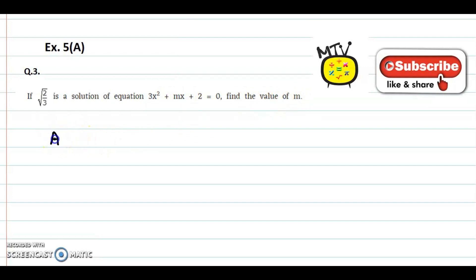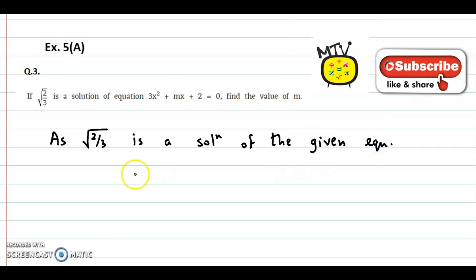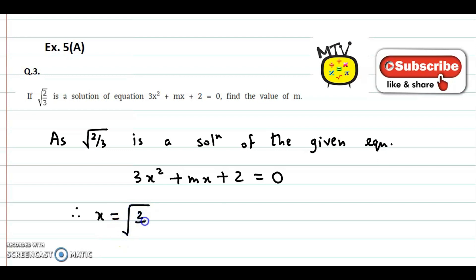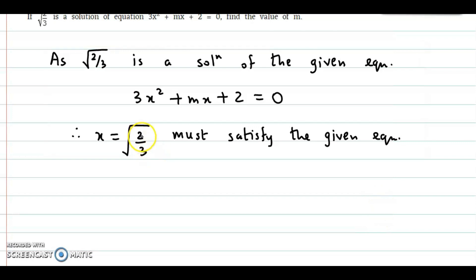We have been given that root of 2 by 3 is a solution of the given equation 3x squared plus mx plus 2 equal to 0. Therefore, x equal to root of 2 by 3 must satisfy the given equation, and therefore we could substitute x equal to root of 2 by 3.